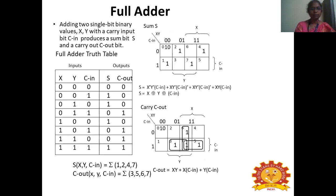Full adder. Adding two single-bit binary values X and Y with carry input CIN produces a sum output and carry output COUT. It can be realized using a simple truth table. X, Y, and CIN are the inputs; sum and COUT are the outputs. With three input variables, 2 power 3 gives eight combinations.